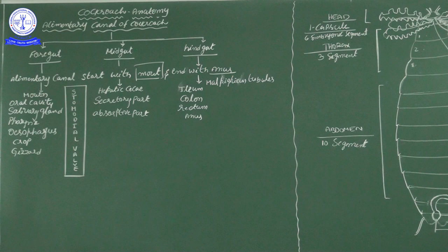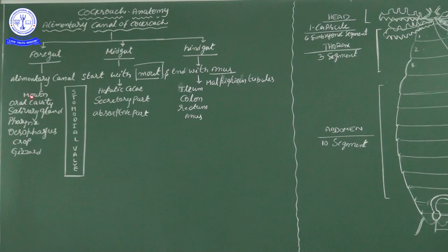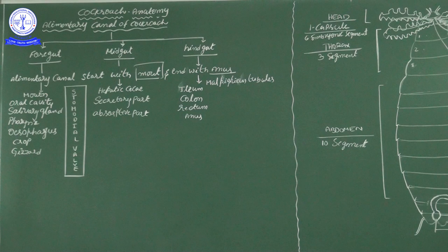The foregut starts with the mouth. The mouth parts of cockroach are biting and chewing type — mandibles are there. The mandibles crush the food item and then swallow it. The maxillae help hold the food items — first pair and second pair of maxillae. The food item enters the oral cavity, also called the buccal cavity. In the oral cavity, there is a secretory gland — the salivary gland. We also have salivary glands in our buccal cavity — three pairs of salivary glands. After mastication, the food enters the pharynx.